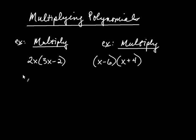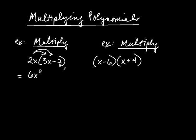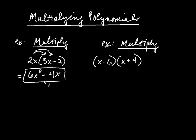The way we multiply a monomial by a binomial is by taking the monomial and distributing it. So we're going to multiply the 2x by the 3x, and then we're going to multiply the 2x by the negative 2. This gives us 2x times 3x is 6x squared, and 2x times negative 2 is negative 4x. We can't go any further because these two terms are not like terms — they have the same variable but different exponents. So we're finished with this problem.